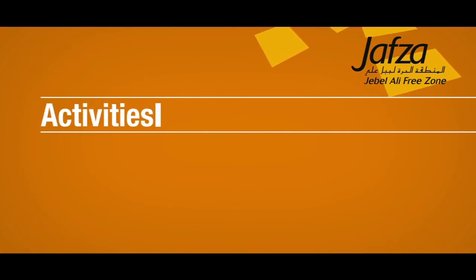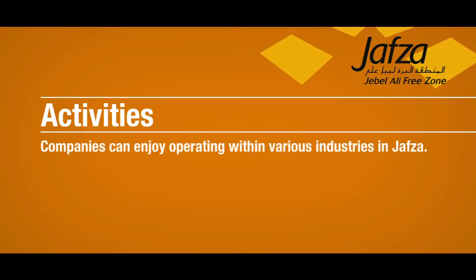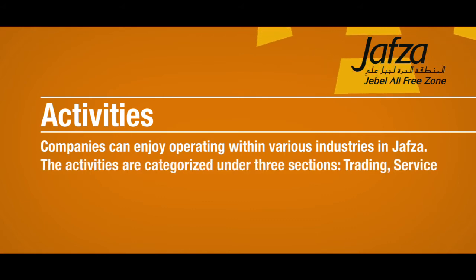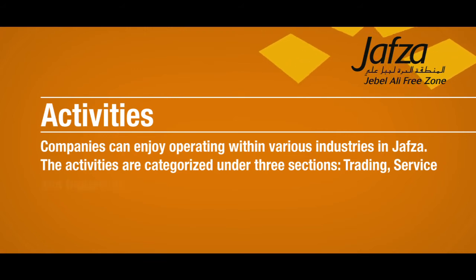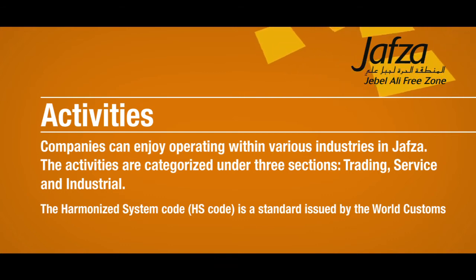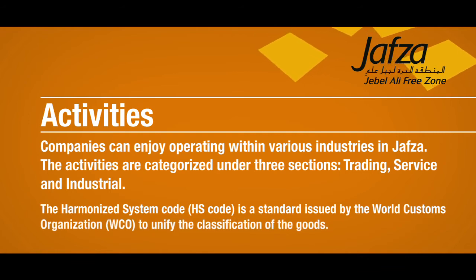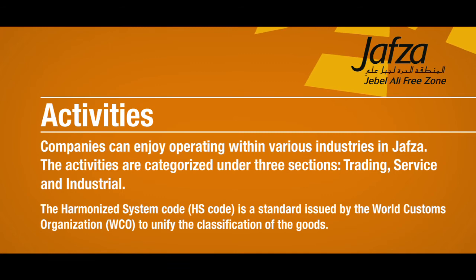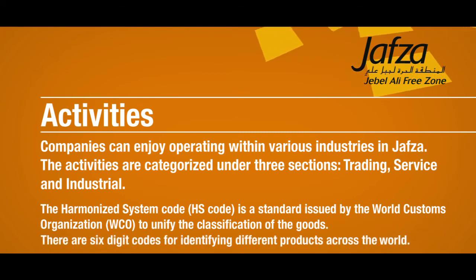The National Industrial License allows the holder the same status as a local or GCC company inside the UAE. Activities: Companies can enjoy operating within various industries in JAFSA. Activities are categorized under trading, service, and industrial. The harmonized system code (HS code) is a standard issued by the World Customs Organization to unify the classification of goods, using six-digit codes for identifying different products across the world.